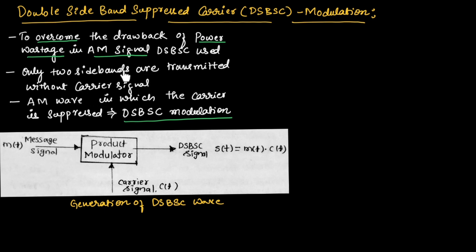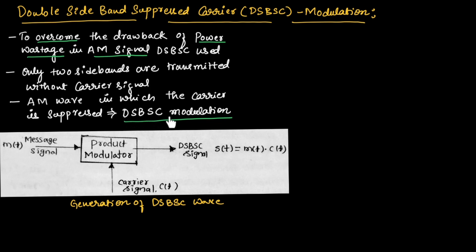We will be transmitting only two sidebands. It is an AM wave in which the carrier is suppressed. Such type of modulation is known as DSBSC modulation, which is double sideband suppressed carrier modulation.